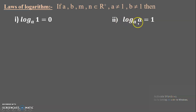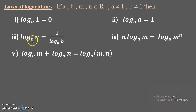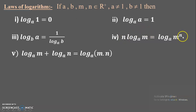The third rule: log a to the base b can be rewritten in reciprocal form as 1 upon log b to the base a — you simply interchange the number and the base. The fourth rule: n log m to any base is equal to log of m raised to n — you can shift that number n up as the index of m. These rules can also be used in reverse.